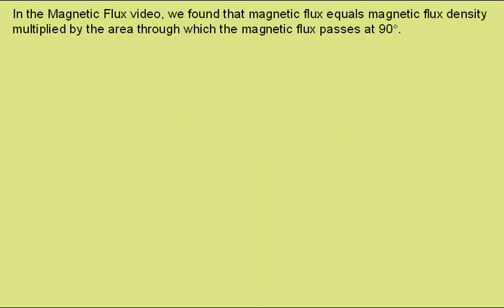Flux Linkage. In the magnetic flux video we found that magnetic flux equals the magnetic flux density multiplied by the area through which the magnetic flux passes at 90 degrees.